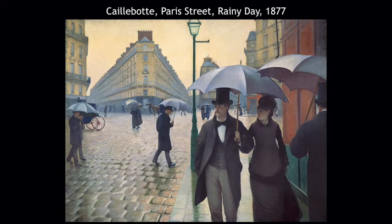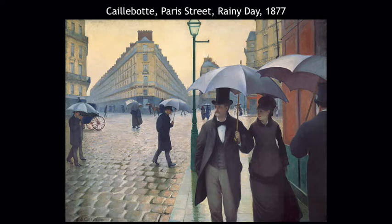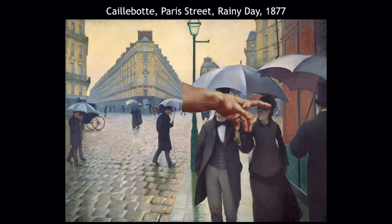Caillebotte is an interesting painter because, unlike his other impressionist peers, he was independently wealthy — he wasn't struggling or forced to paint in a certain way. His painting style is different; you lose the brushiness that many impressionists have. He paints modern life as the impressionists did, perhaps closer to Manet and realism, but he was friends with them, believed in them, and showed with them. He had a fascination with the regularized radiating streets of Paris that Haussmann built, making the streets as important as the bustling, anonymous crowds.